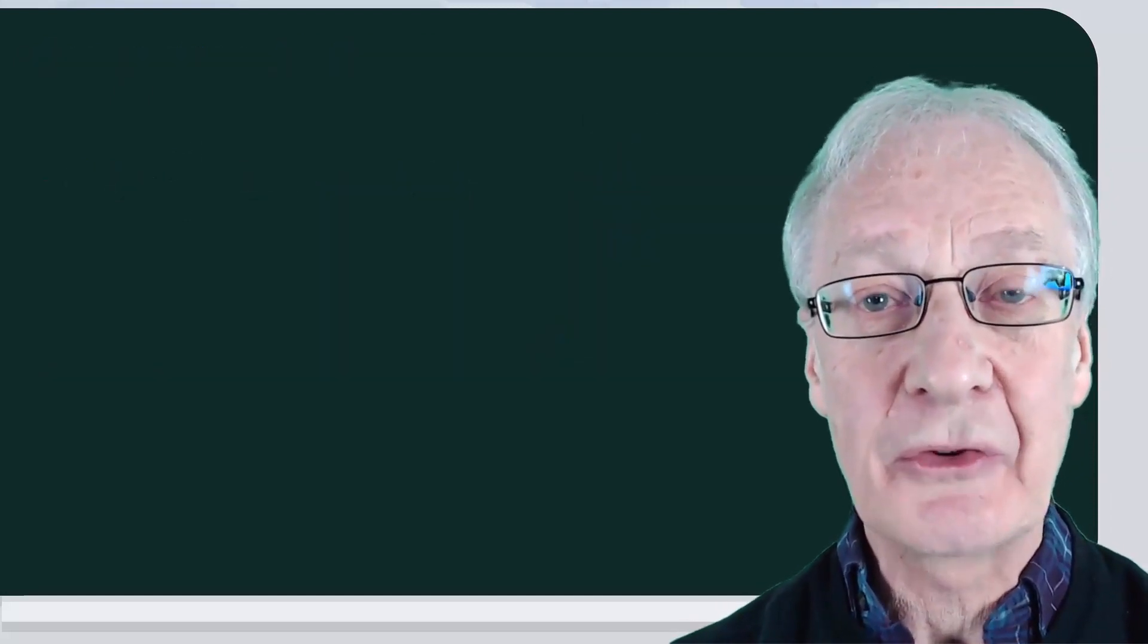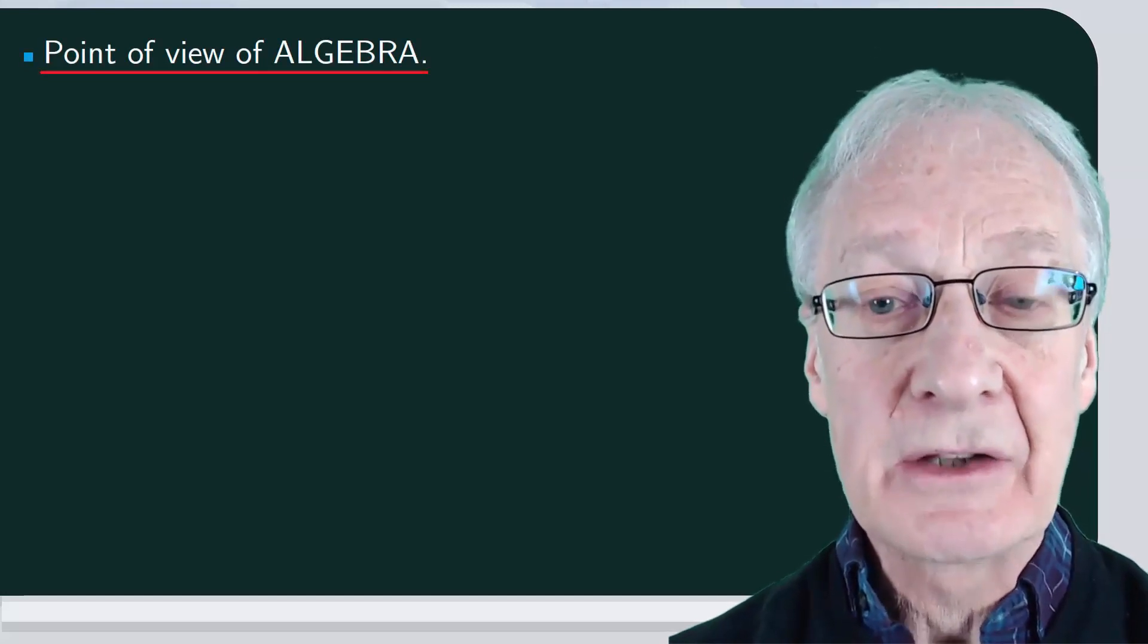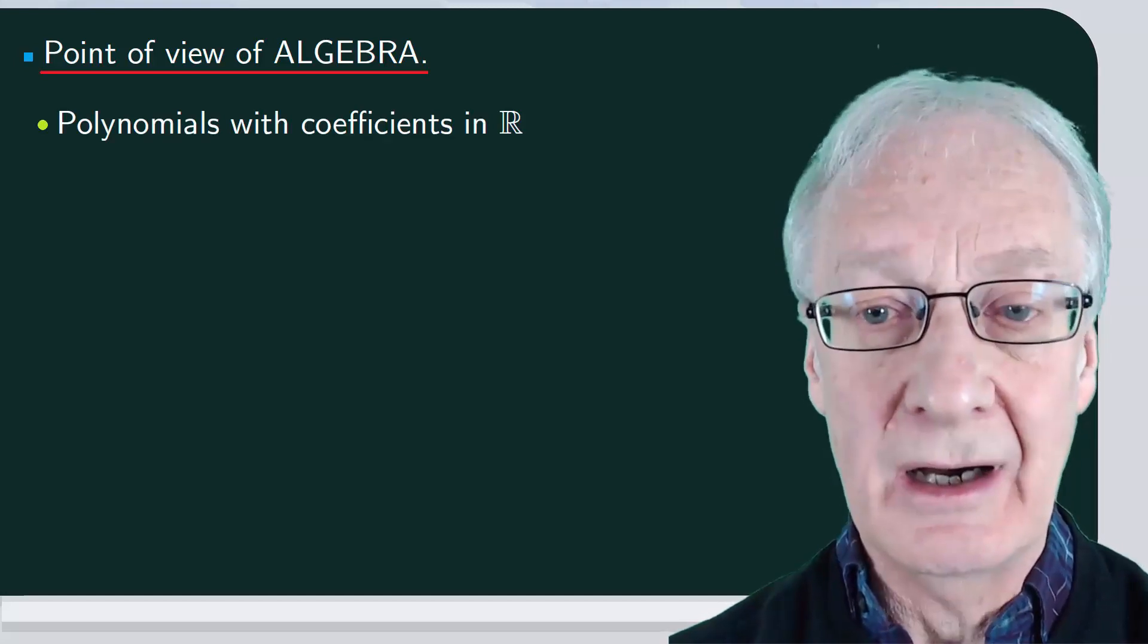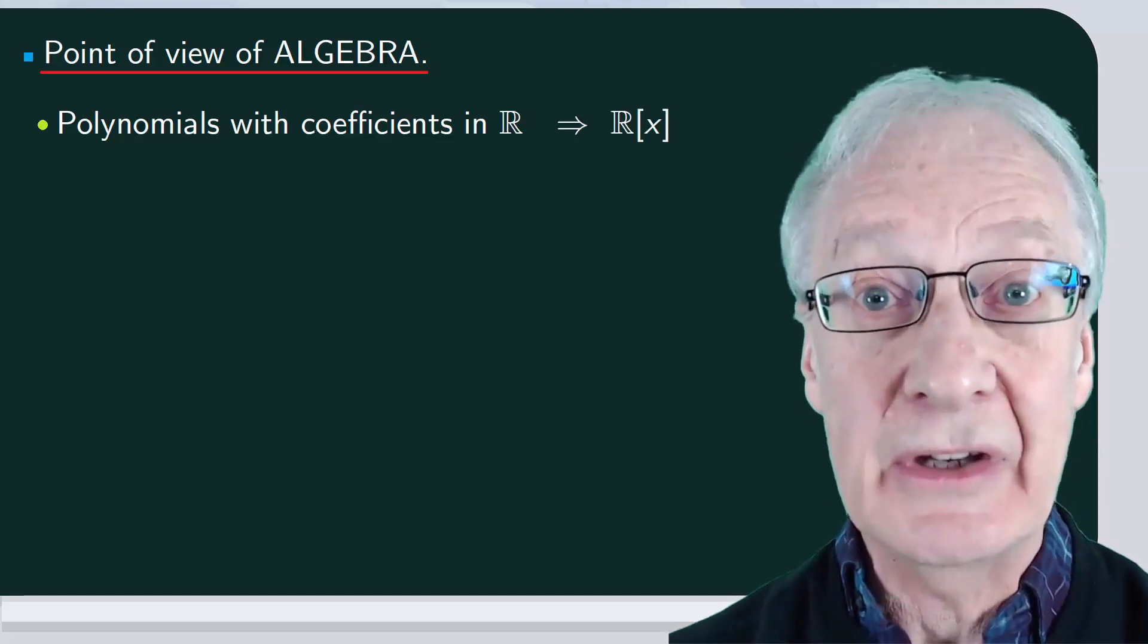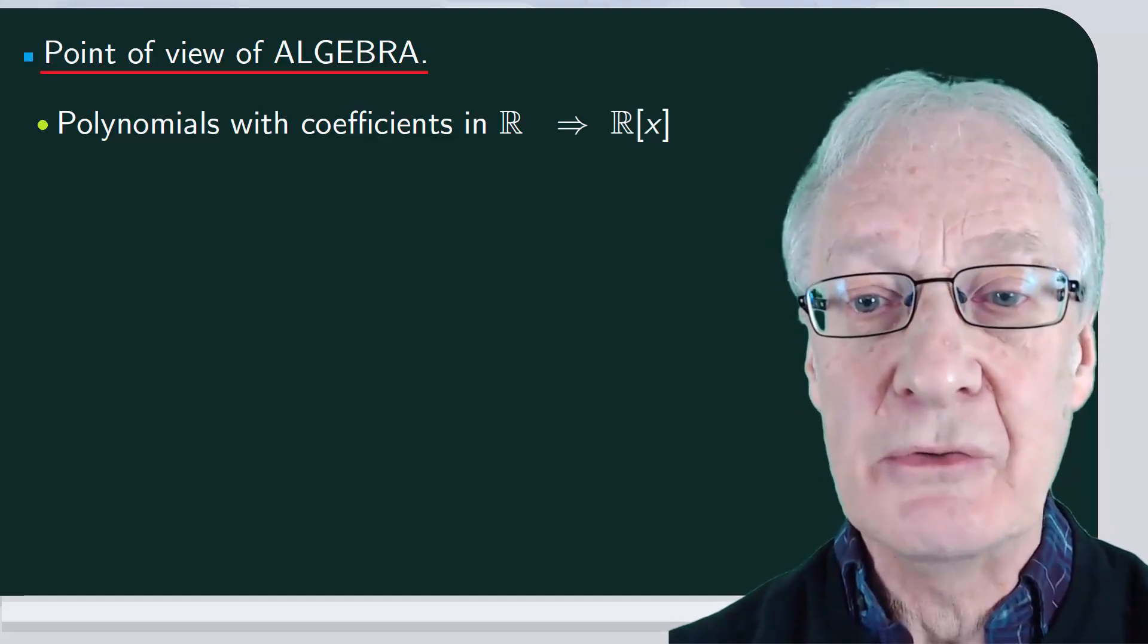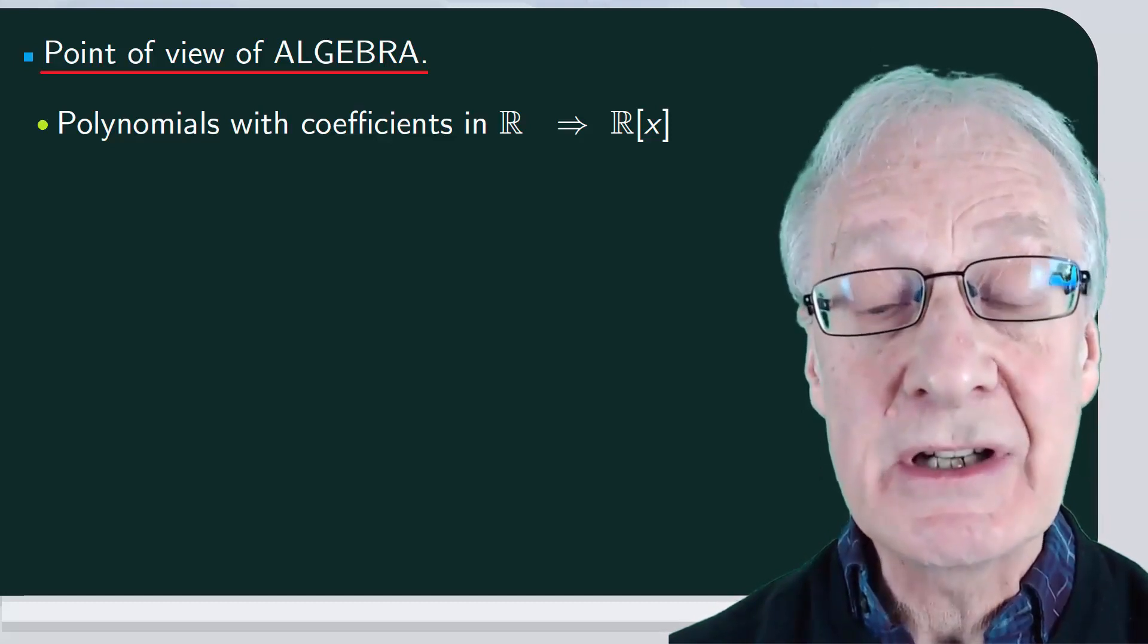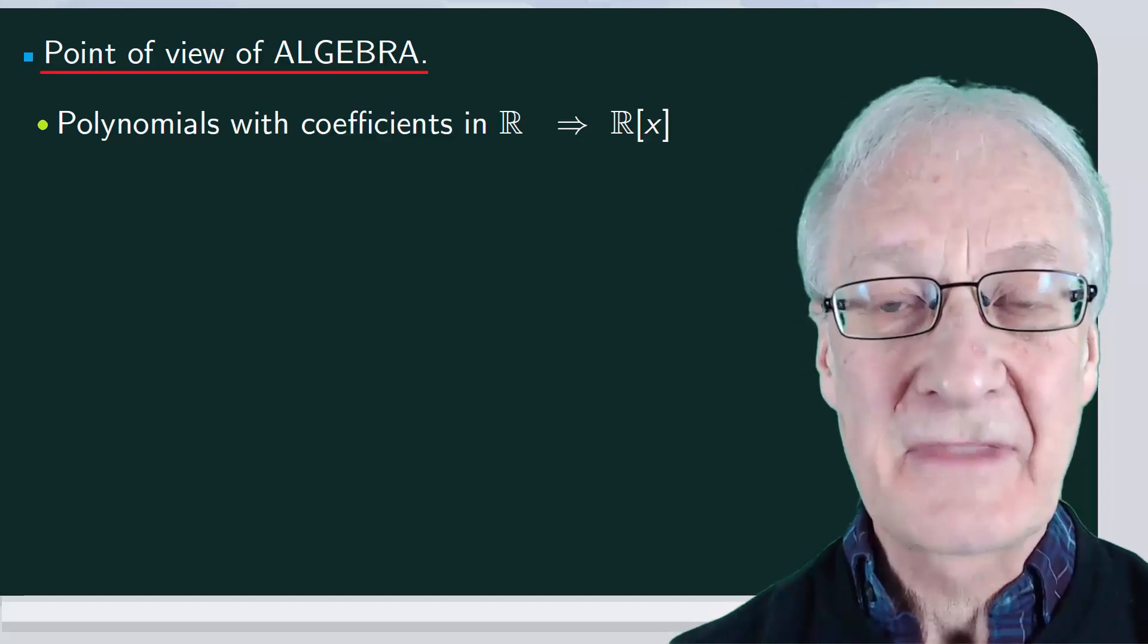Now we're going to analyze x squared over x and x from the point of view of algebraic fractions. Consider the set of polynomials with coefficients in r. This set is usually denoted as r followed by x in square brackets. As you know, in this set we can define the operations addition, subtraction, and multiplication.